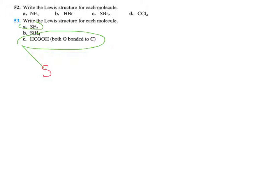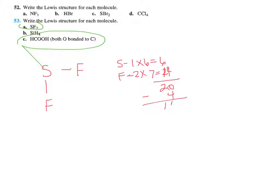For SF2 — sulfur bonded to two fluorines: one sulfur contributes 6 valence electrons, two fluorines contribute 7 each for 14, totaling 20 electrons. We use 4 in the skeleton bonds, leaving 16 to distribute. Placing all 16 around the remaining atoms satisfies all octets — this is straightforward.